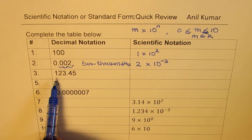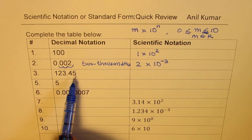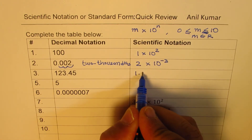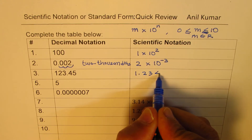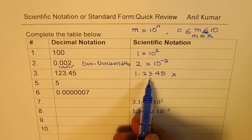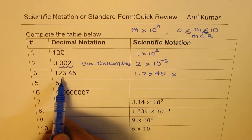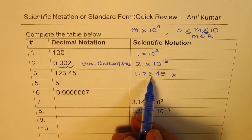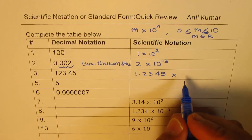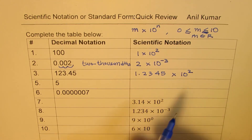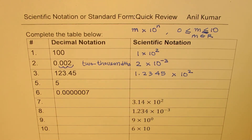The next number is 123.45. We'll write this as 1.2345 times something. Now this is much smaller than the actual number, so we should be multiplying this by 100 to make it the same. So 100 means 10 squared. I hope in these steps you have understood the process.